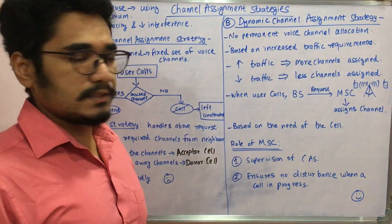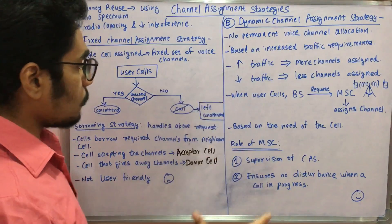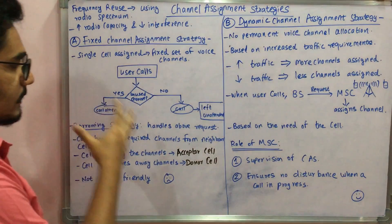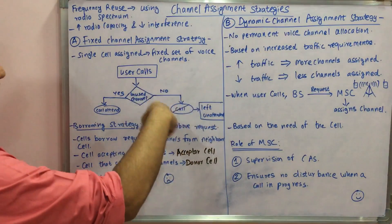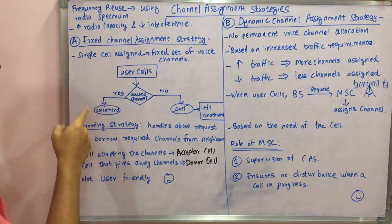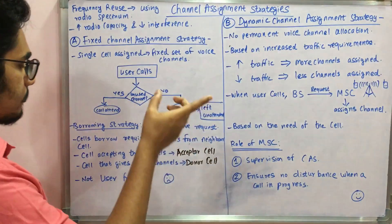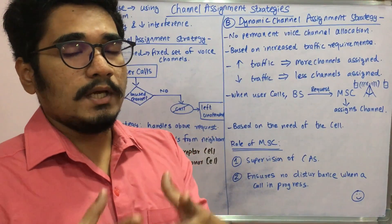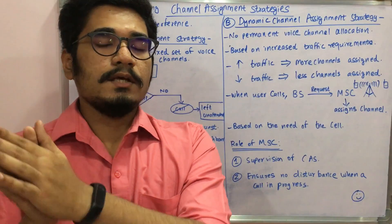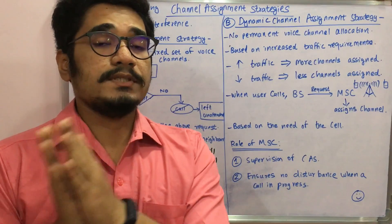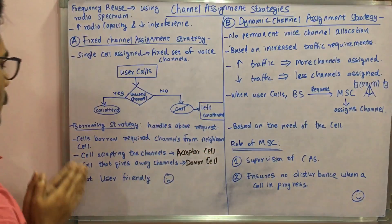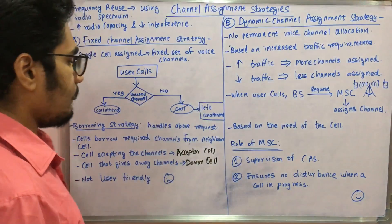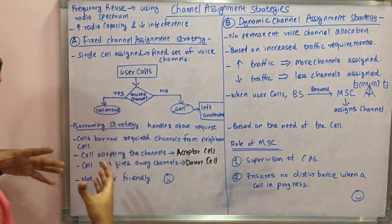Since we cannot leave a call in an inconsistent state, the fixed technique uses a borrowing strategy to handle the scenario where no unused channel is left. When a cell cannot serve a request, it borrows the required channels from a neighboring cell. The cell accepting the borrowed channels is called the acceptor cell, and the cell that lends away channels is called the donor cell.